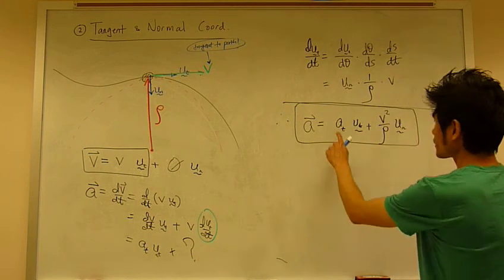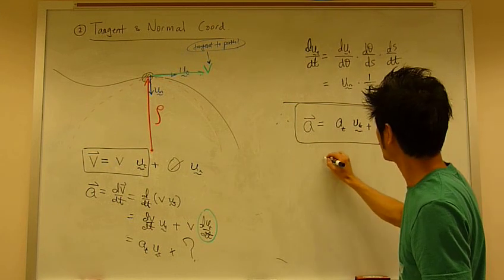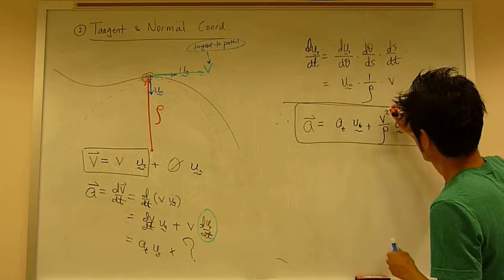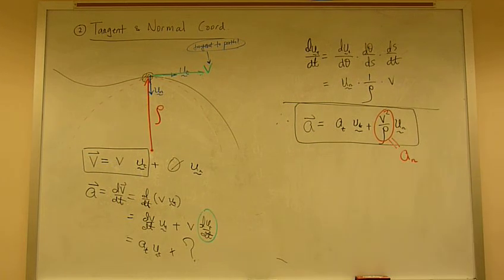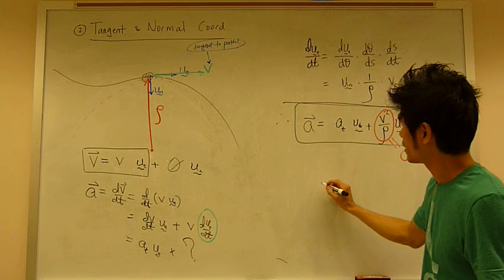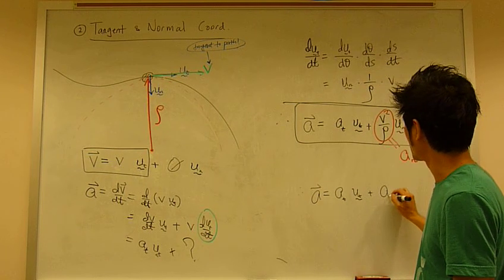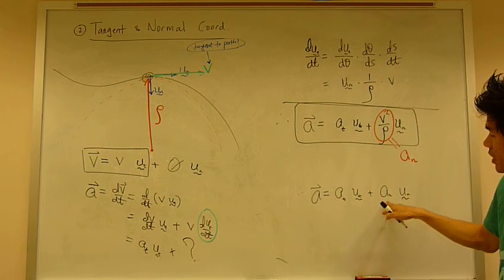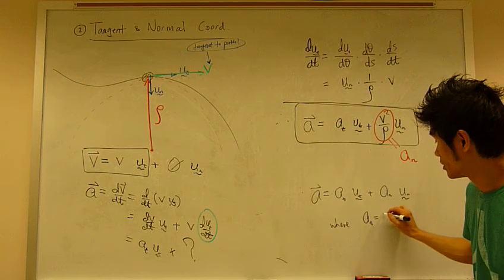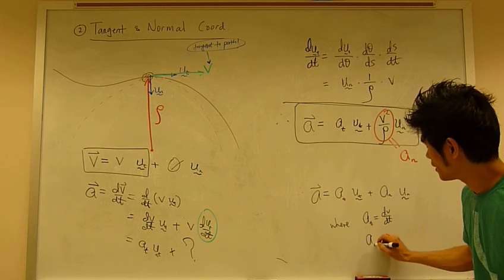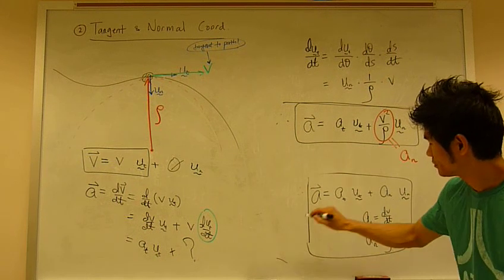So this at is the tangential component of the acceleration. This is the normal component of the acceleration. So two components. You can rewrite this as at ut plus an un. So tangential component, normal component, where at simply is the rate of change of velocity, and an is v squared over rho.